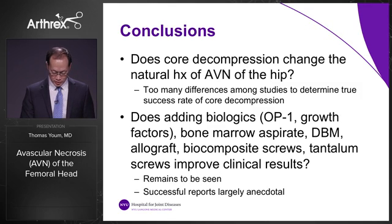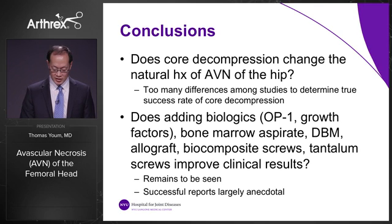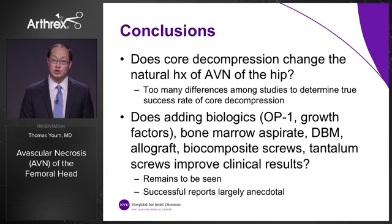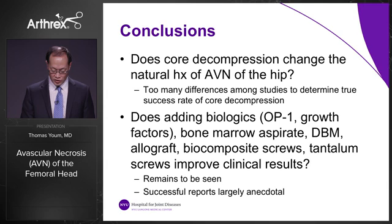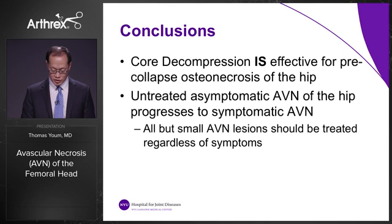In conclusion, does core decompression change the natural history of avascular necrosis of the hip? There are too many differences among studies to determine the true success rate. Whether adding biologics — OP-1 growth factors, bone marrow aspirate, etc. — improves clinical results remains to be seen. However, there is a trend for success in both clinical and laboratory tests for cartilage and bone healing. Core decompression is effective for pre-collapse osteonecrosis, and untreated asymptomatic AVN can progress to symptomatic disease, so all but the smallest AVN lesions should be treated regardless of symptoms.